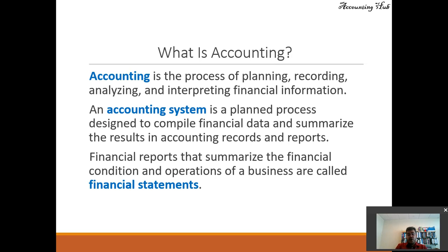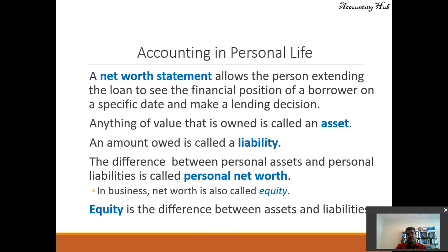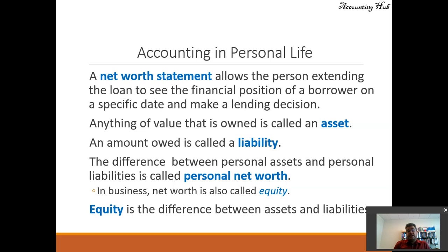Is it possible to account for our personal life? Yes, it is. We have a net worth statement, which is a sort of balance sheet. It allows the person extending a loan to see the financial position of a borrower on a specific date and make a lending decision. Anything of value that one owns or controls is called an asset — sometimes we don't own it but we control it, and it is still considered an asset.